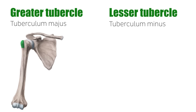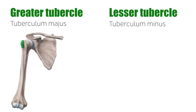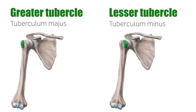On these two images, you see two prominences known as the greater tubercle and lesser tubercle of the humerus. These areas serve as attachment points for some of the major muscles of your shoulder.